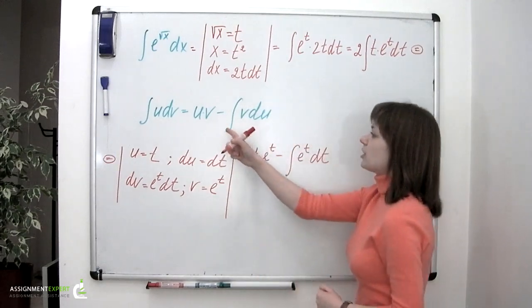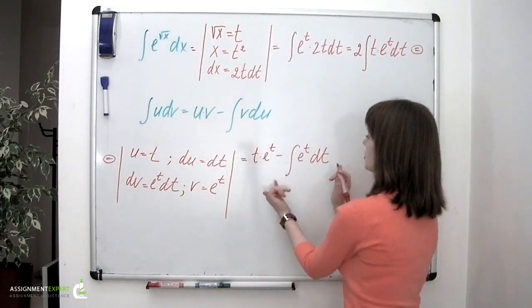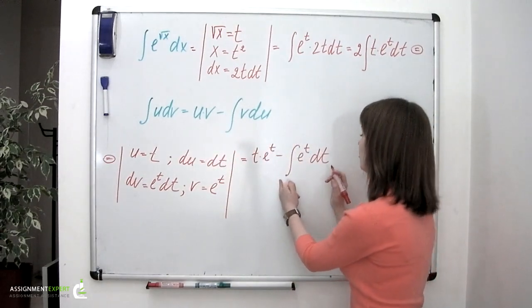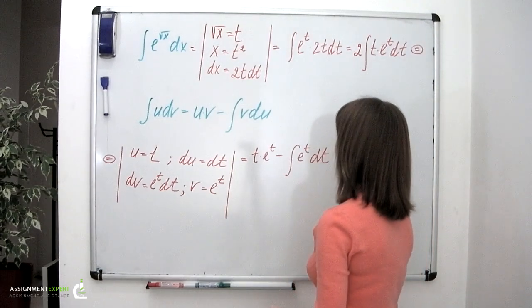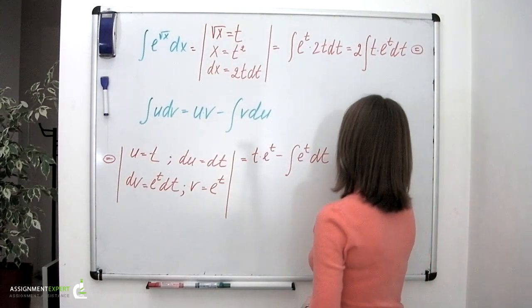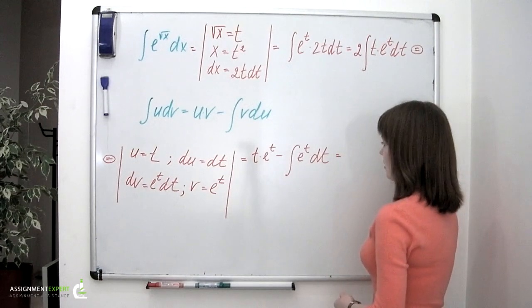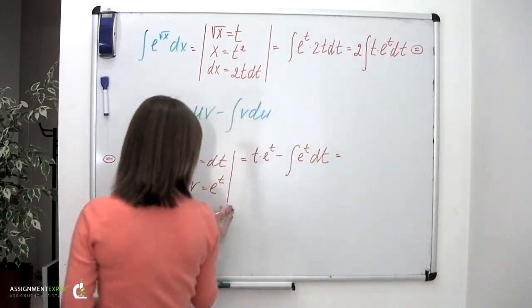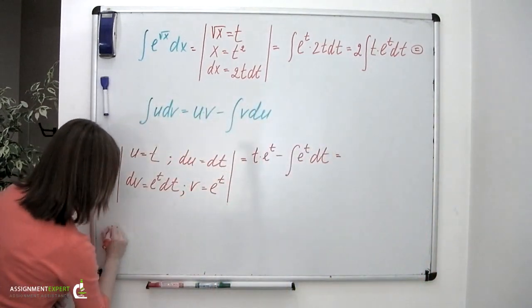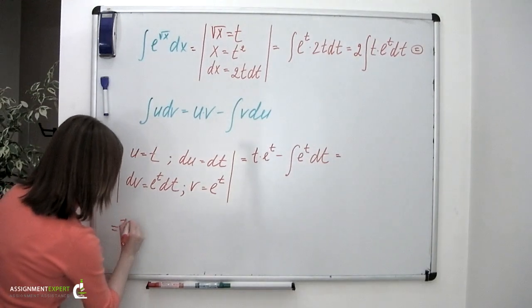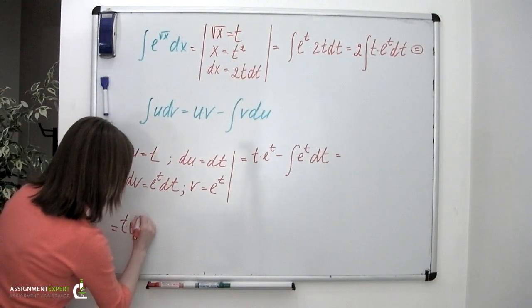This formula led us to this new integral, which obviously can easily be evaluated. So we'll have t times e to the t.